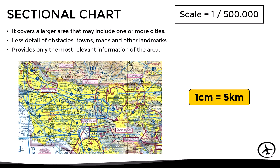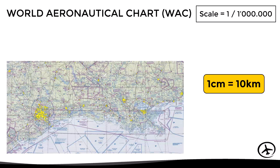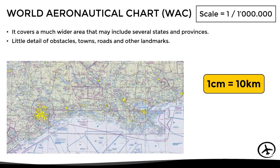Finally, let's look at the world aeronautical chart, which is abbreviated as WAC. This chart has a scale of 1 in 1 million, which means that each centimeter measured on the chart is equal to 10 kilometers. Here, since the scale is much smaller, it covers a much wider area that may include several states and provinces. A smaller scale will also mean that there will be little detail of obstacles, towns, roads, and other landmarks, and it provides only basic aeronautical information of the area.